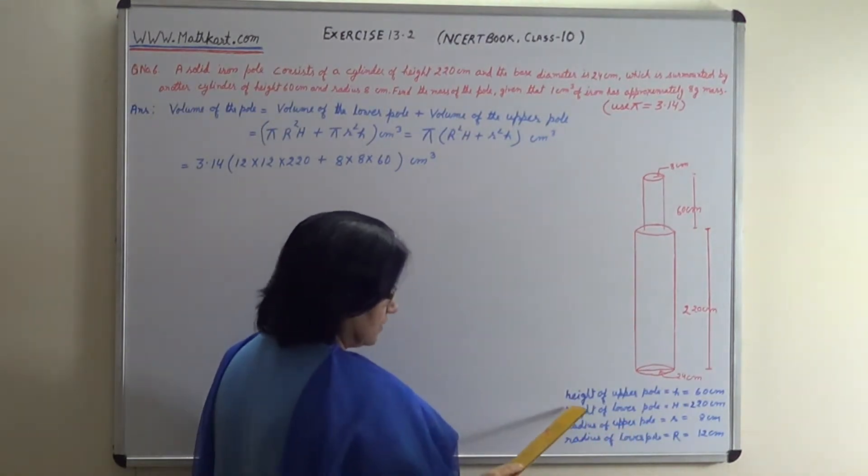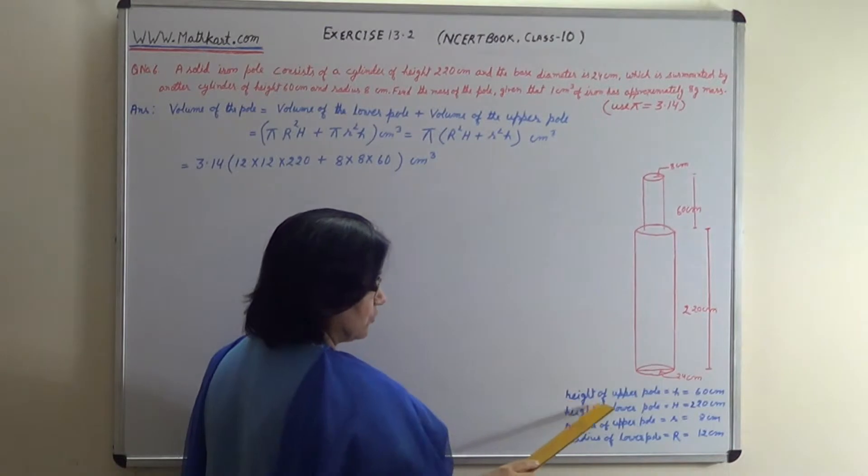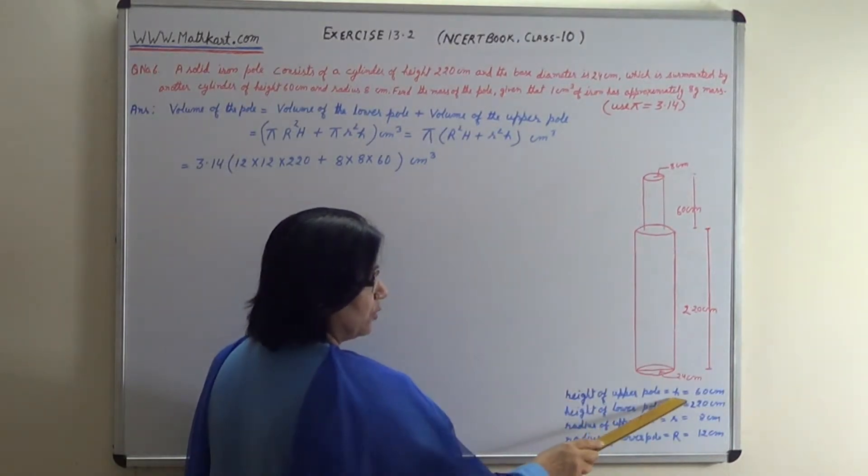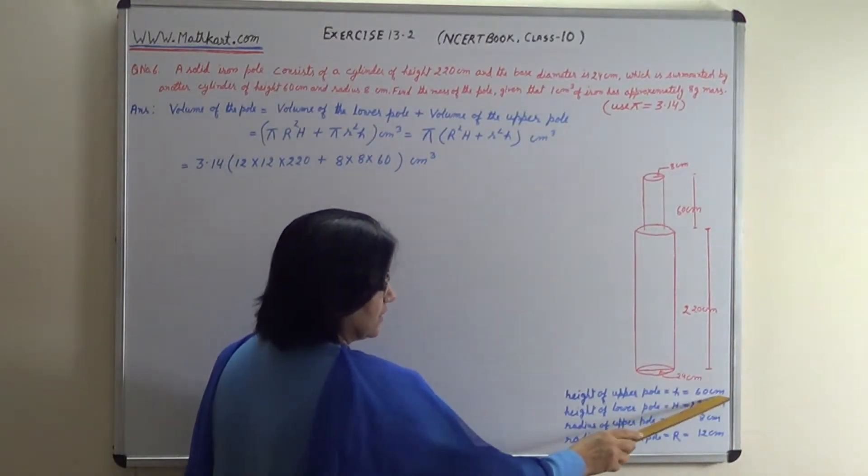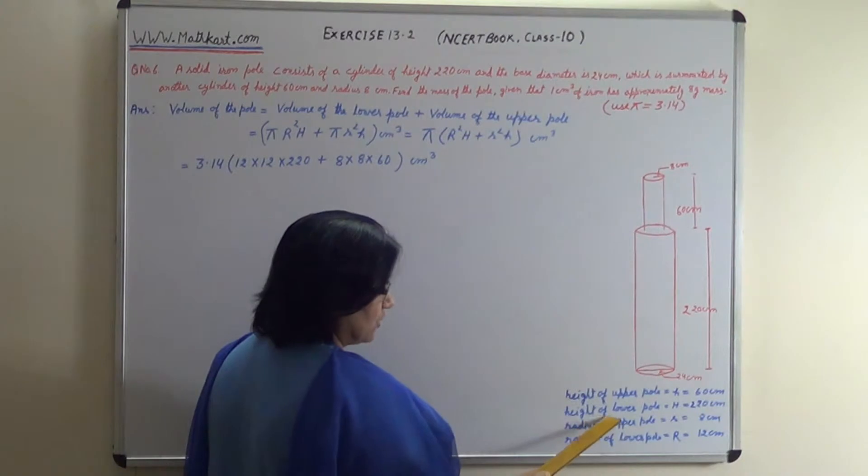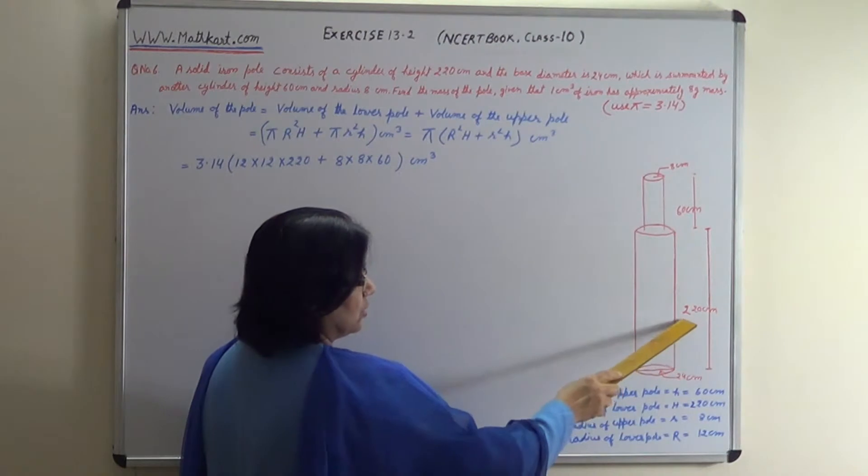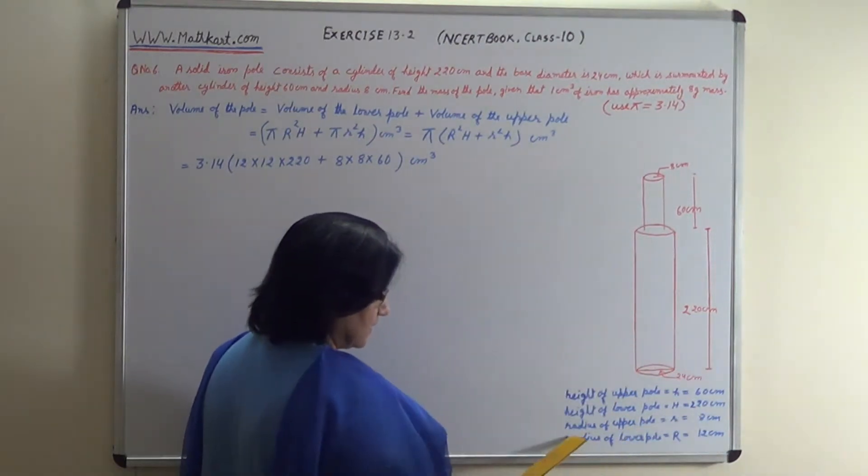The measurements for the pole: height of the upper pole denoted by small h is equal to 60 cm. Height of the lower pole, capital H, equals 220 cm. Radius of the upper pole...